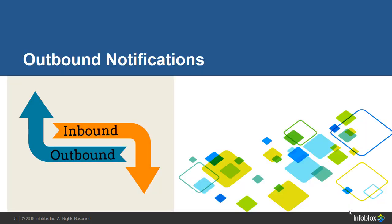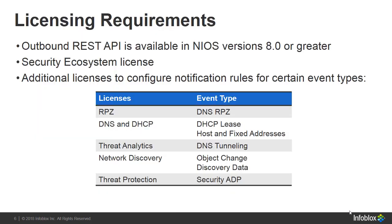Outbound Notifications allows you to integrate with your security ecosystem and trigger a workflow based on certain events. Outbound API notifications are available with NIOS versions 8.0 and above. To enable it, you must have the security ecosystem license installed in your grid. Depending on the notification rules and overall transferred information, you may additionally need to install the DNS firewall, Active Trust, Threat Insight, and Network Insight licenses.